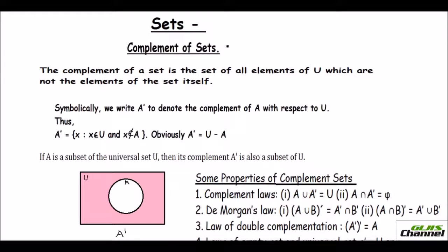For instance, you have a universal set as well as a set A. If I take {1, 2, 3, 4, 5} — this is my universal set — and I take my set A as {2, 4}, just the even numbers between 1 to 5.